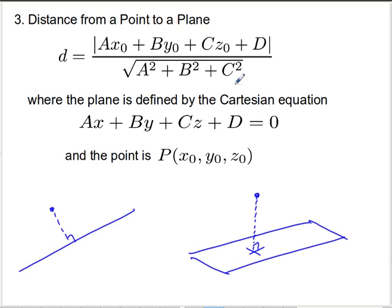For using this formula, we're going to need to have our plane defined by the Cartesian equation. If your plane is defined by parametric or vector equations, you're going to have to convert to the Cartesian equation — that's something we've covered in a previous lesson. But provided you know the coordinates of the point and have the equation of the plane in Cartesian form, you end up with a formula that's very similar to the distance between a point and a line in R2, the difference being that in R3 the Cartesian equation describes a plane as opposed to a line.